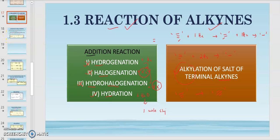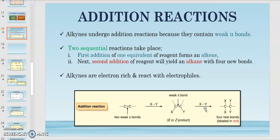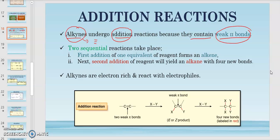For the addition reactions of alkyne, just like alkene, because it contains unsaturated bonding — which is double bond or triple bond — alkyne undergoes addition reactions due to the weak pi bond. Two sequential reactions take place: the first is addition of one equivalent reagent to form an alkene, and the second addition yields an alkane with four new bonds. Breaking two pi bonds will produce four sigma bonds — that is why you get four new bonds.